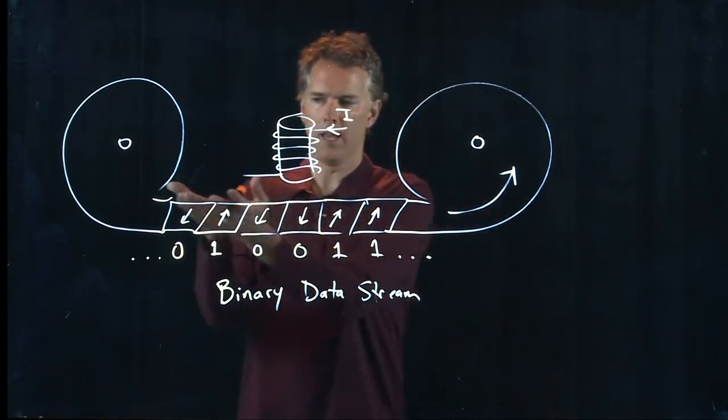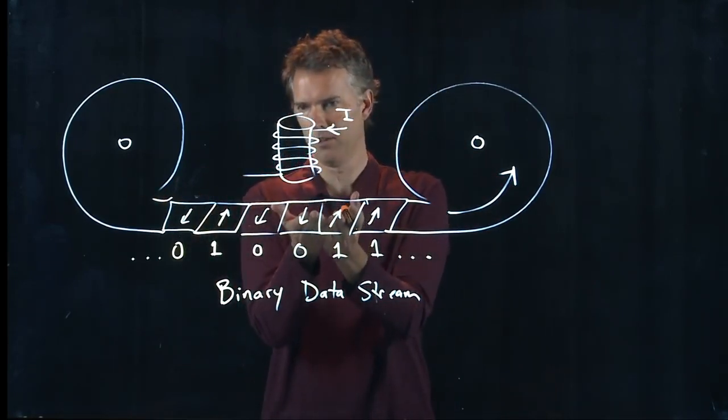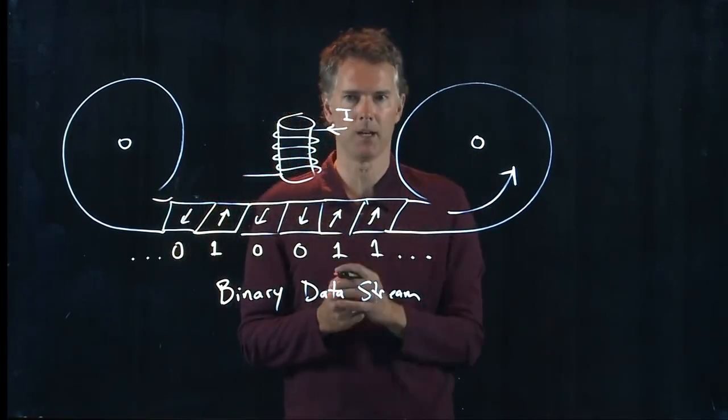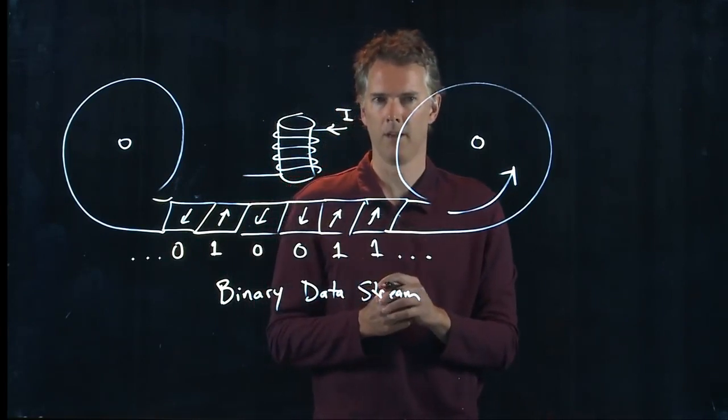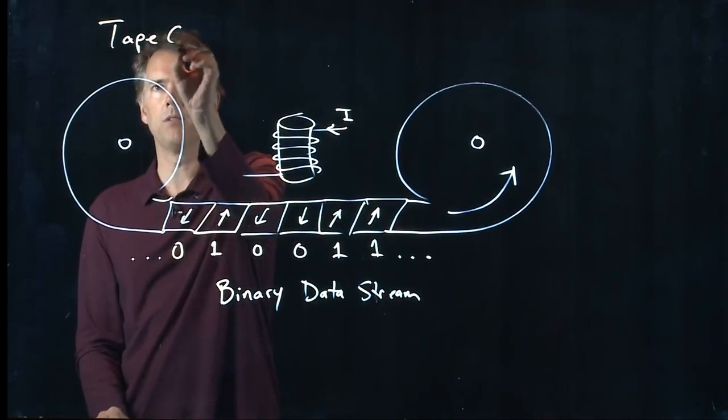So if I write this information onto this device, I can in fact store stuff onto this magnetic material that coils up here. And this is what is called a tape cassette.